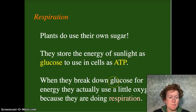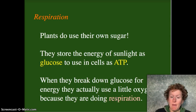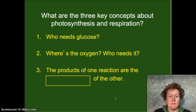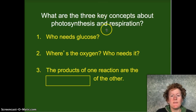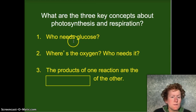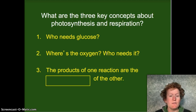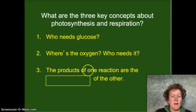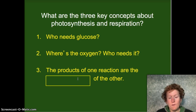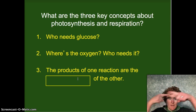When plants do cellular respiration and break down that glucose, they actually need a little oxygen. But remember, plants are also producing oxygen when they do photosynthesis, and plants don't need oxygen to do photosynthesis. The three key concepts: who needs glucose — everybody; where's the oxygen — everybody needs oxygen when they do cellular respiration, but plants don't need oxygen to do photosynthesis, they need carbon dioxide. The products of photosynthesis are the reactants of cellular respiration, and vice versa — they're reactions running in reverse.